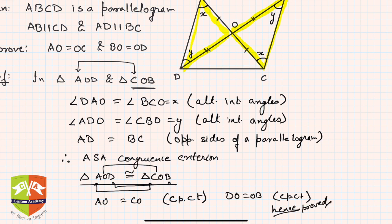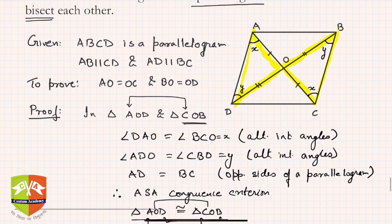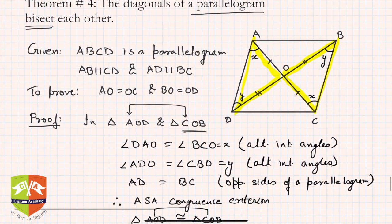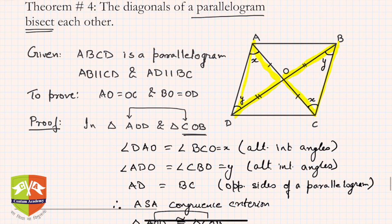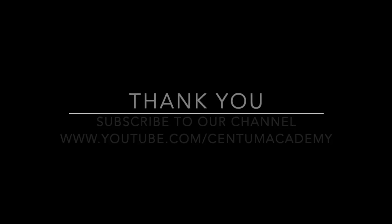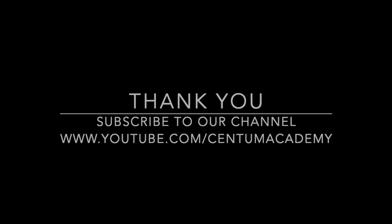So now you know how to prove such a theorem. The strategy was to find two triangles which include all the sides to be proved equal, then use properties previously proved to show they are congruent, and finally cite corresponding parts of congruent triangles to achieve the proof.